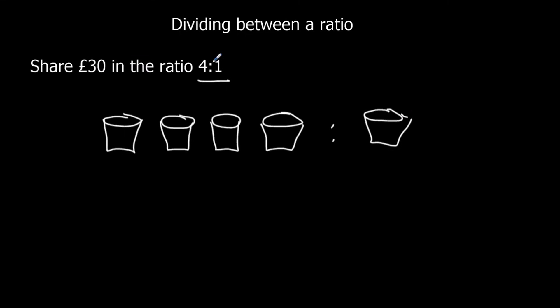So for every 4 this person gets, this person gets 1. And that's like 4 piles of money and 1 pile of money. So what we can say is there are 5 parts. We need to share the 30 pounds evenly between the 5 cups.